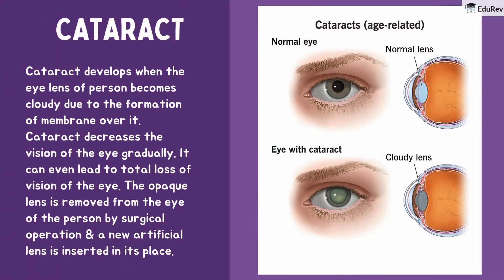Another defect is cataract. Cataract develops when the eye lens becomes cloudy due to the formation of a membrane over it. It decreases vision gradually and can even lead to total loss of vision. The opaque lens is removed by surgical operation, or a new artificial lens is inserted in its place.